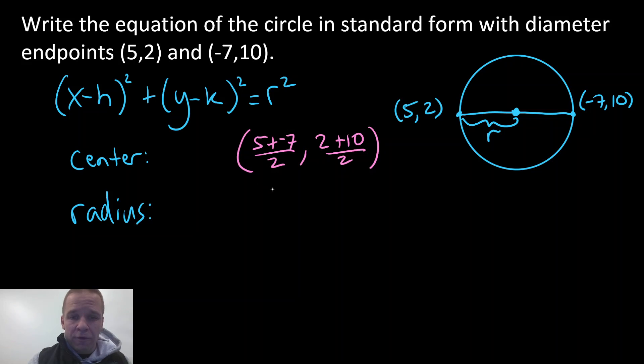All right, so I've got -2 over 2 is -1, and then I have 12 over 2, which is 6. So my center has (-1,6) for its coordinates. Got my center, we're good to go.